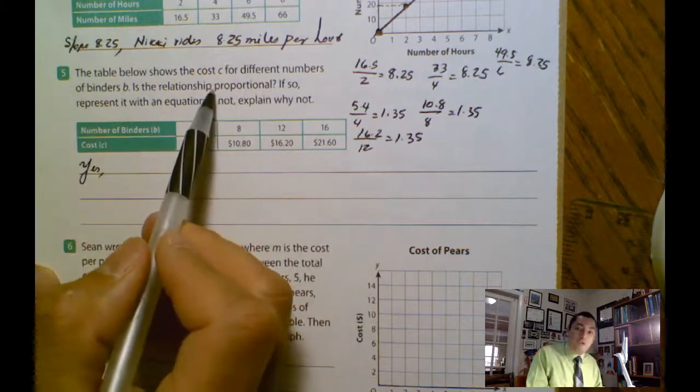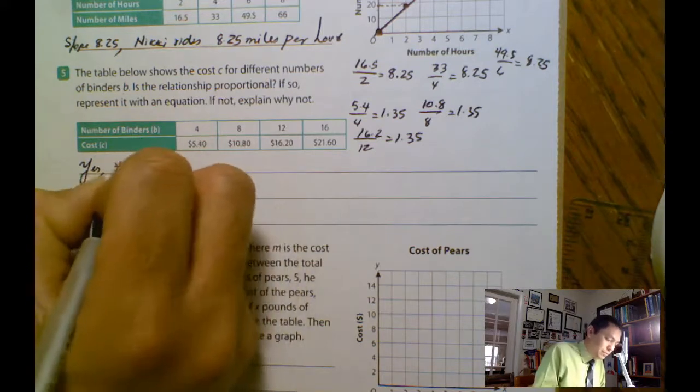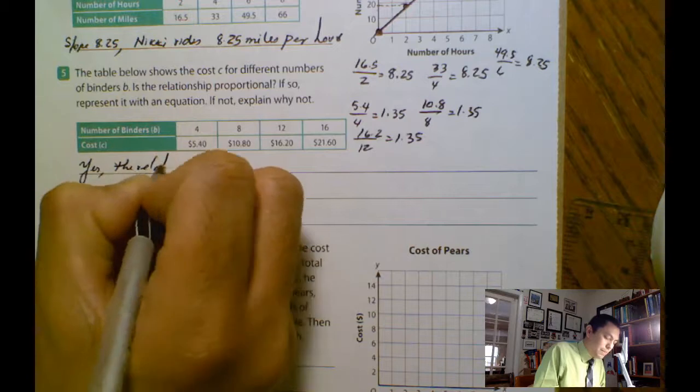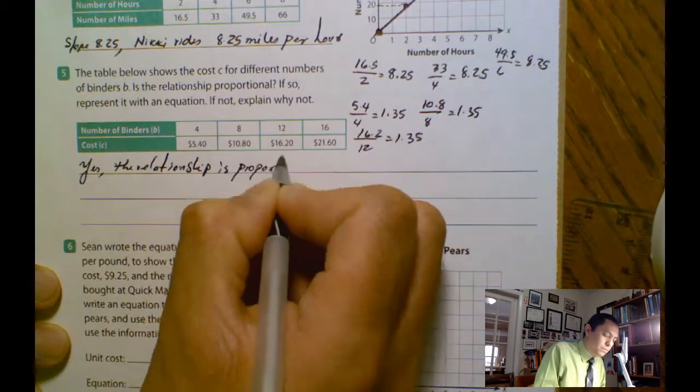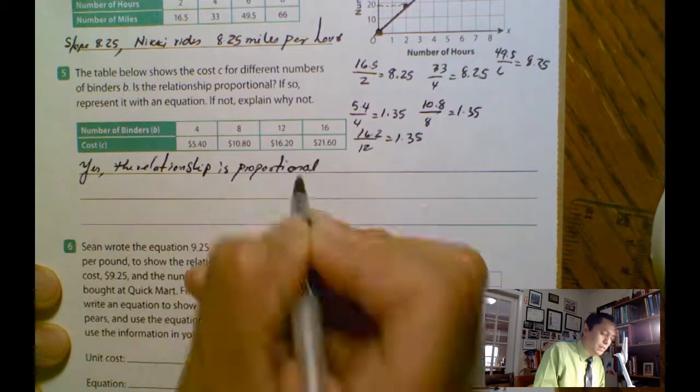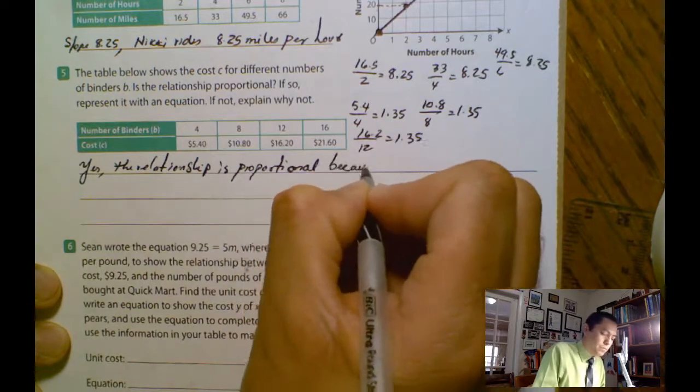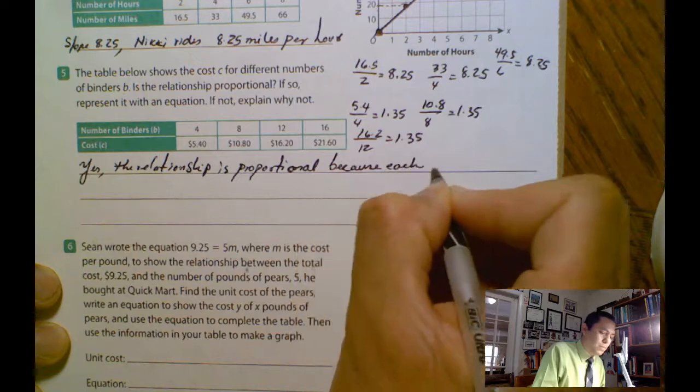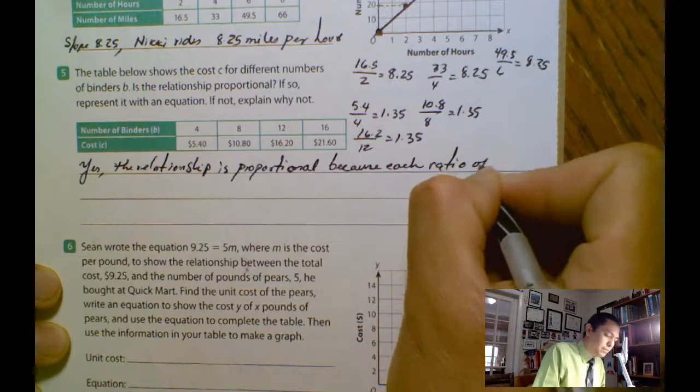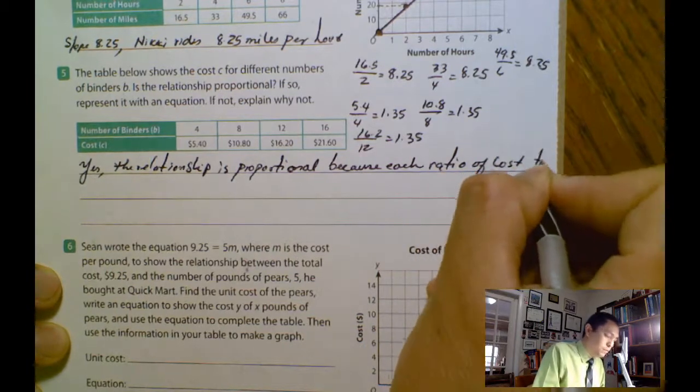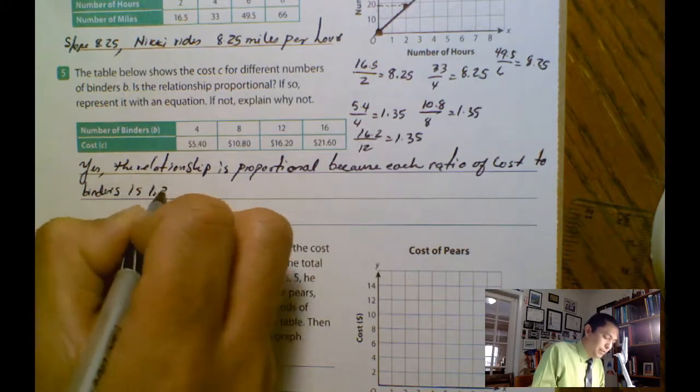Because the question is, is the relationship proportional? Yes, it is proportional. The relationship is proportional because each ratio is equal to 1.35.